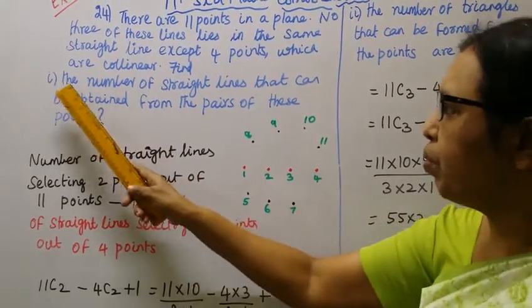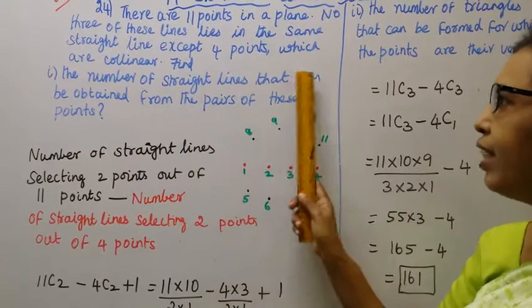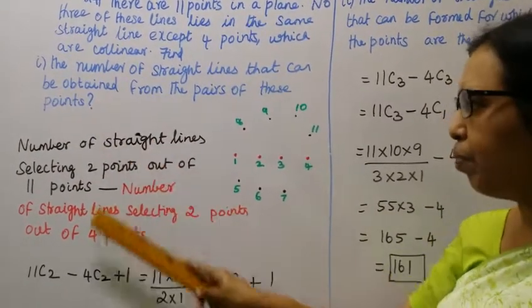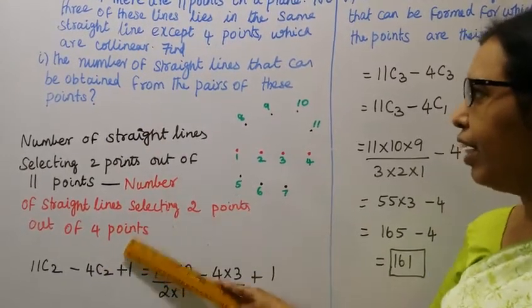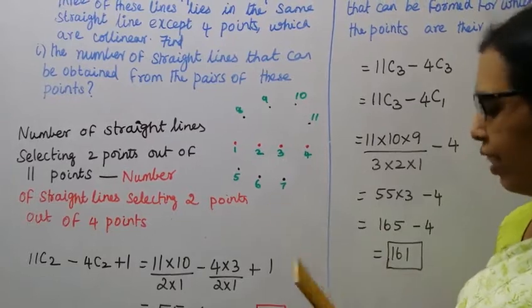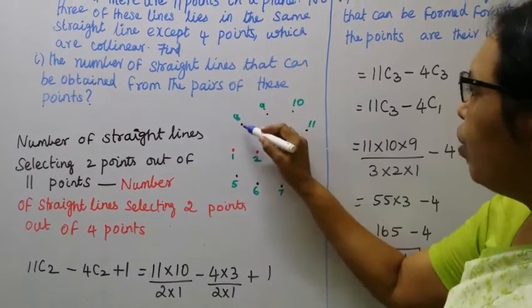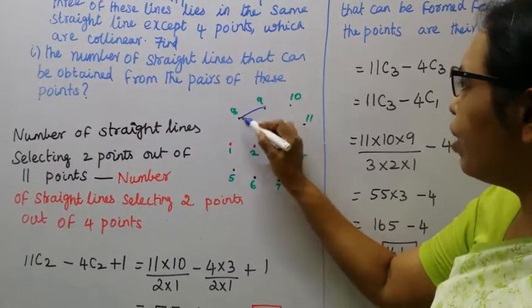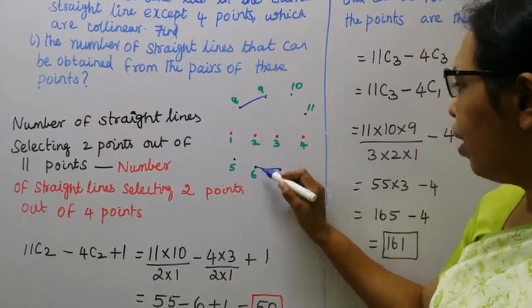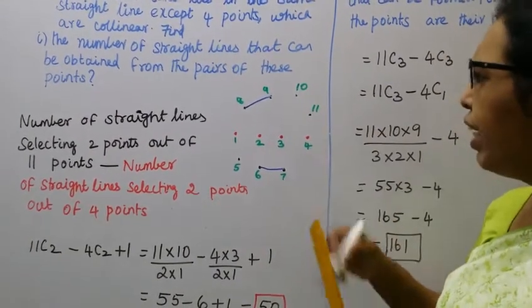First subdivision: the number of straight lines that can be obtained from the pairs of these points. If I have 11 points and I want to draw a straight line, I need 2 points. To draw a straight line, I need 2 points.